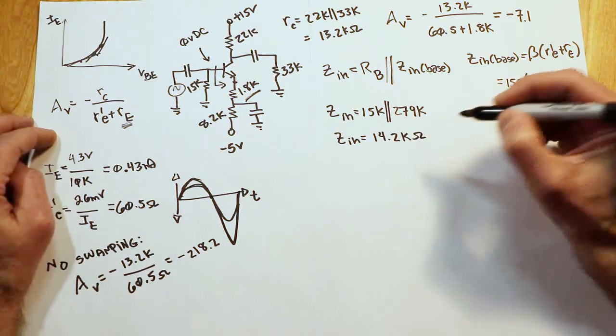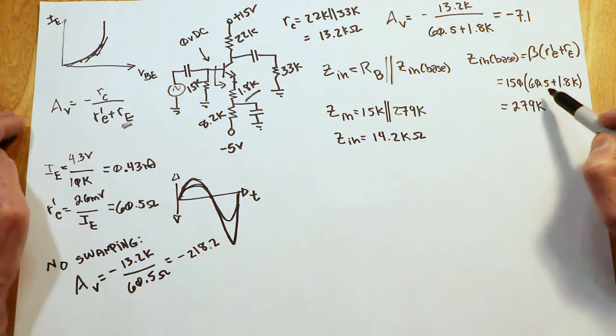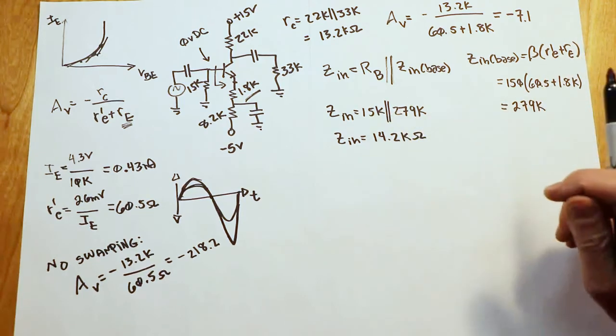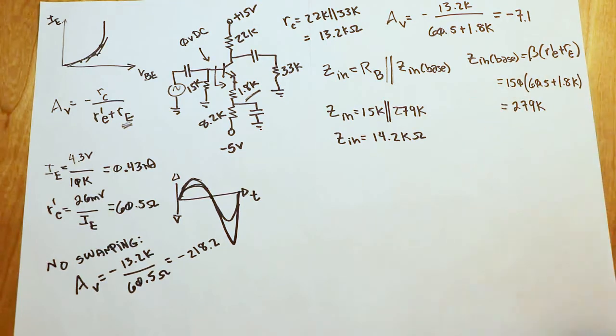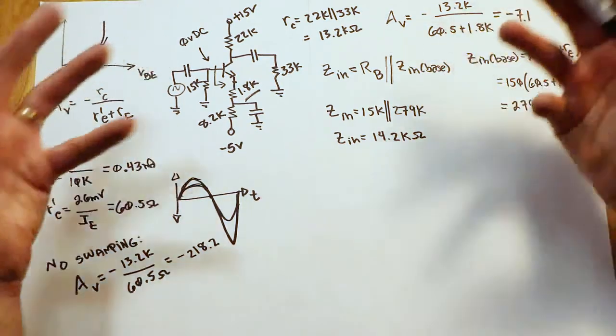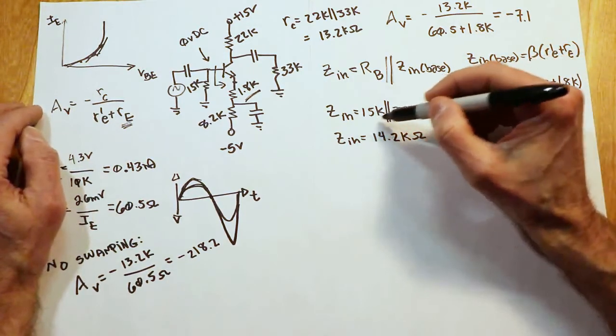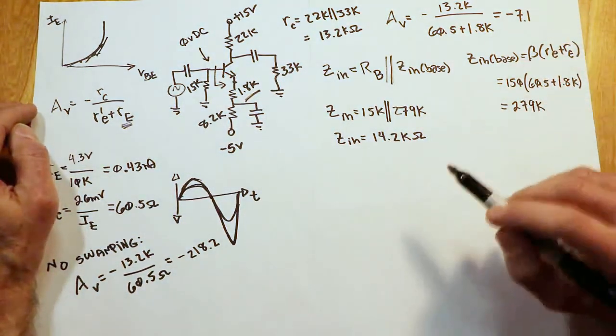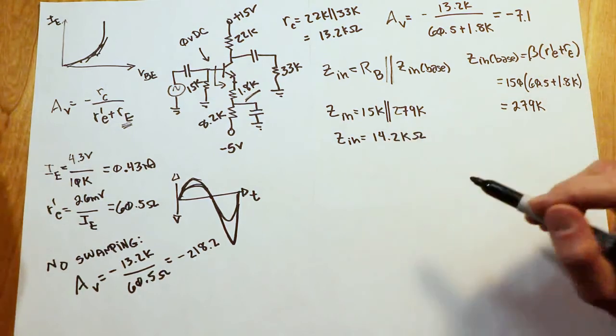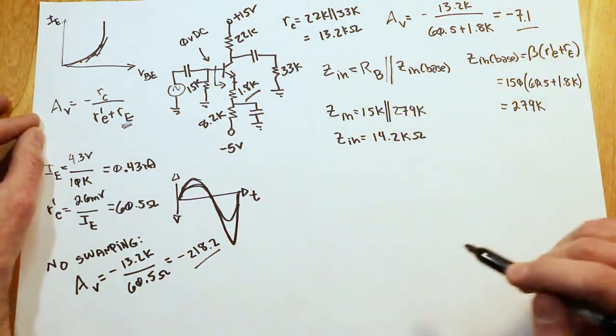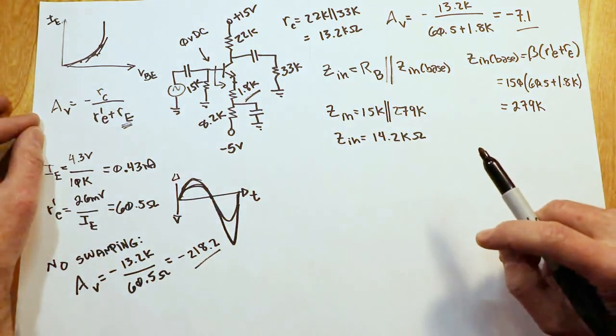Now, if we didn't swamp this, the Zn base would have just been 150 times 60 ohms. So you're looking at somewhere in the vicinity of 9 K, and we would put that 9 K in parallel with the 15 K, and we'd be looking at maybe half this value. So in this particular case, we don't see as dramatic a change in the input impedance because of this Rb value. If we had used a larger Rb value here, the effect would have been more dramatic. But nonetheless, we can see what's going on. We are getting an increase in input impedance. Clearly, there's a loss, a reduction in gain. It still is inverting, however, and the reduction in distortion is manifest.